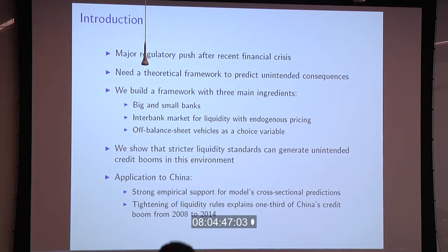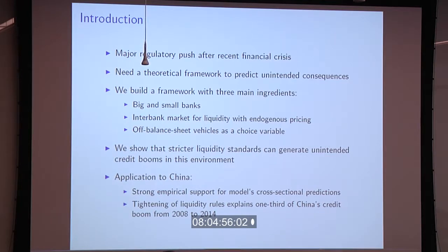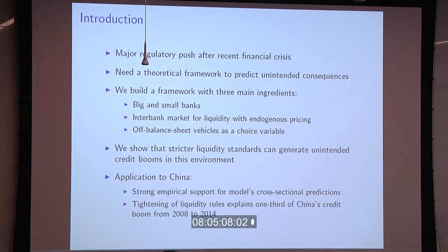We argue this is applicable to China. China has had a huge credit boom over the past decade or so. We use our model to think about how much this mechanism — as opposed to other stories related to fiscal stimulus — can explain the rise of credit in China from the supply side, meaning an increasing intensity of banks in their willingness to lend. We find that about a third of China's credit boom can be explained as the unintended effect of tighter liquidity regulation.